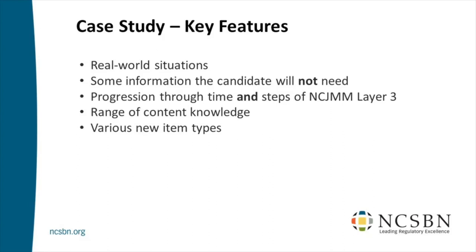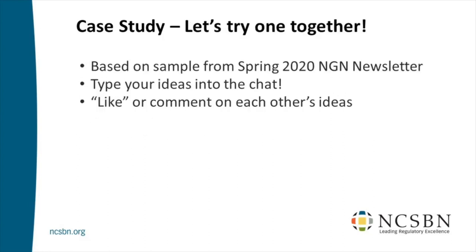Those six boxes in order are the blueprint for every single case study on the exam. You also saw a range of content knowledge needed — to do really well you need to know many different things, unlike a multiple-choice item where you might get lucky knowing one thing. You saw new item types in two flavors: extensions of existing types like extended multiple response and extended drag and drop, and genuinely new types: the pull-down menu, highlighting, and matrix or grid.